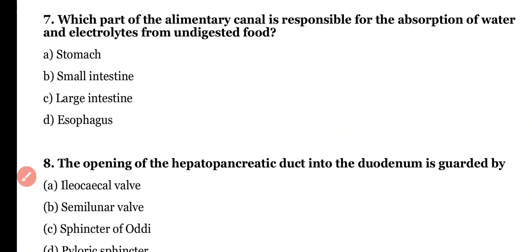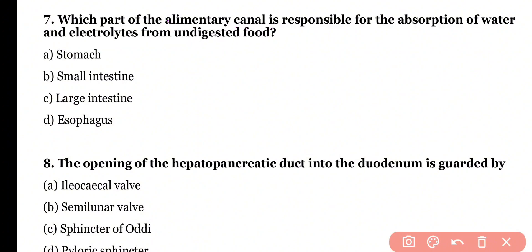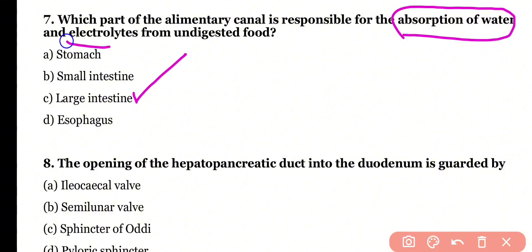Question 7. Which part of the alimentary canal is responsible for the absorption of water and electrolytes from undigested food? Stomach, small intestine, large intestine, or esophagus? Correct answer is option C. The large intestine is mainly responsible for absorption of water as well as electrolytes.